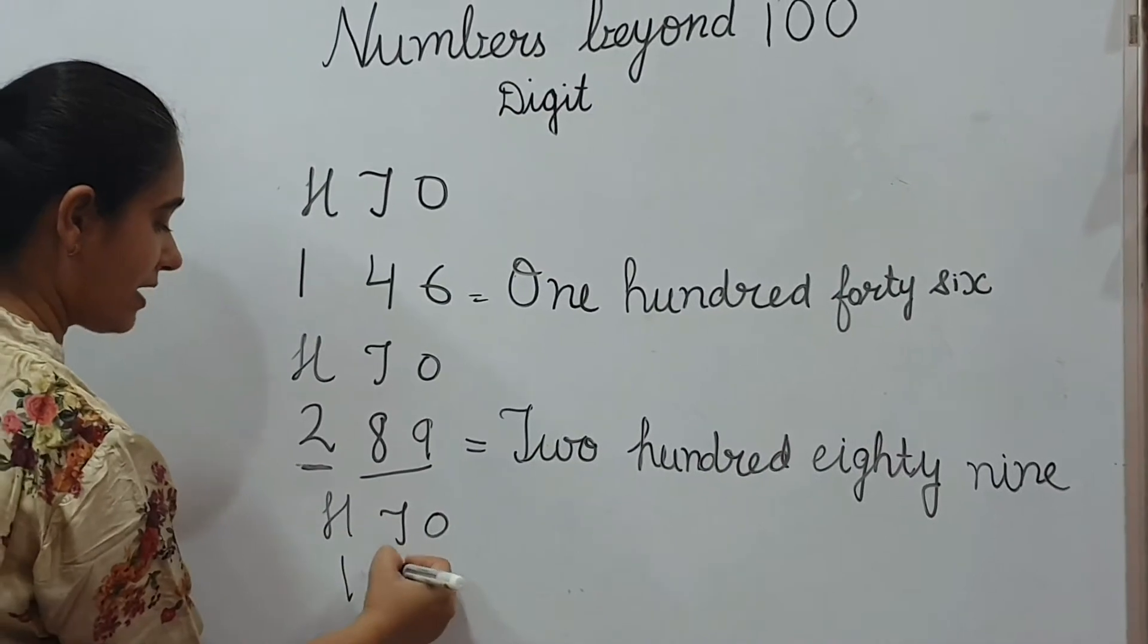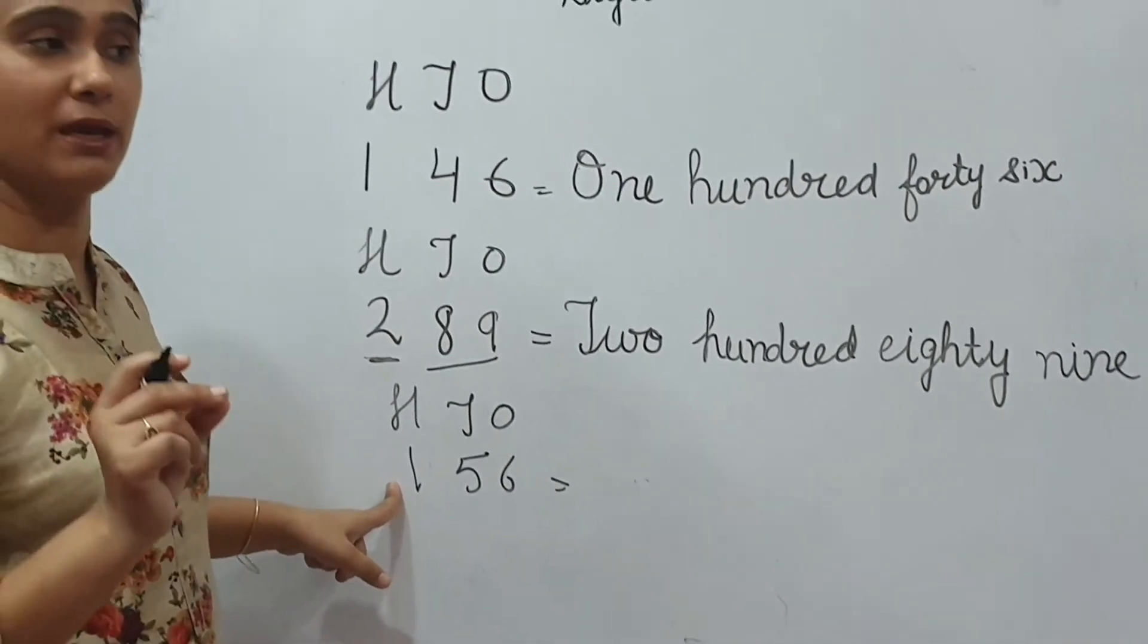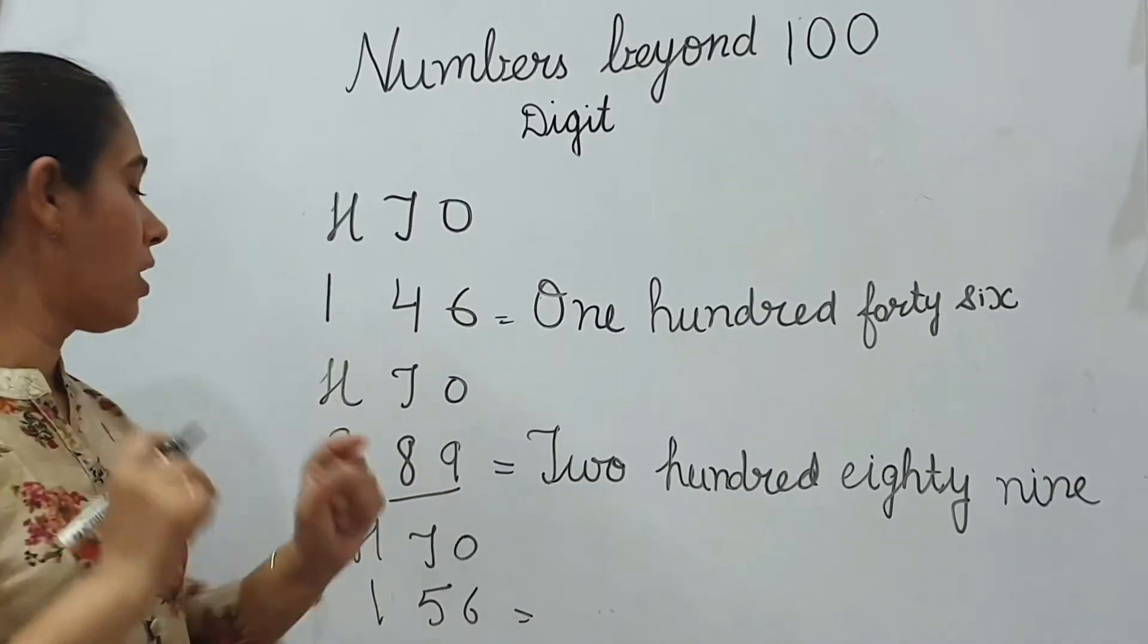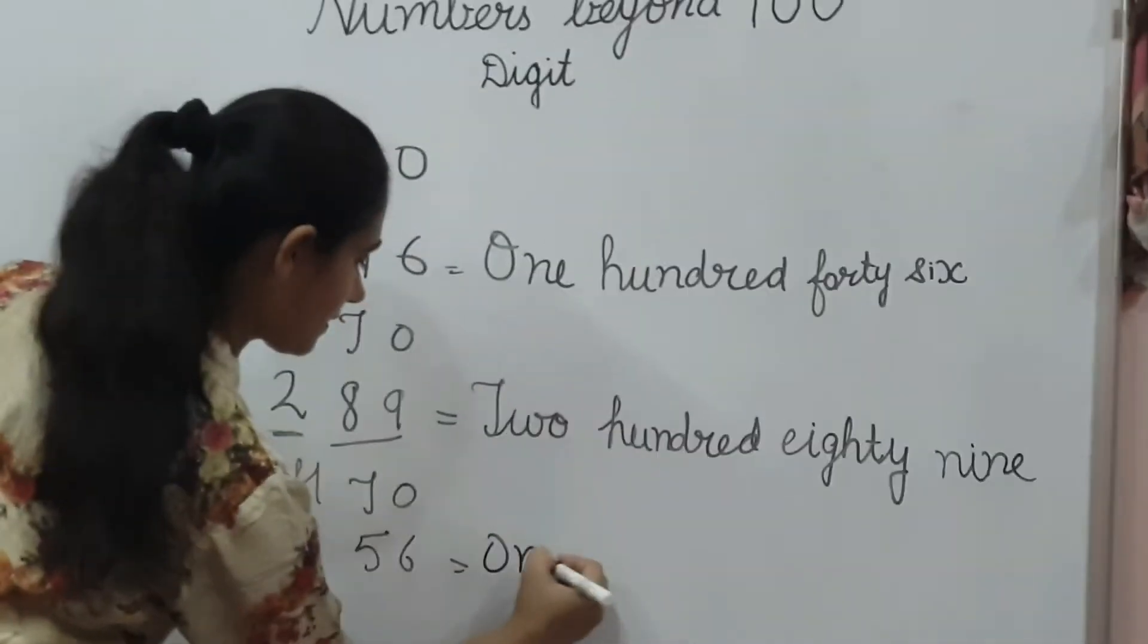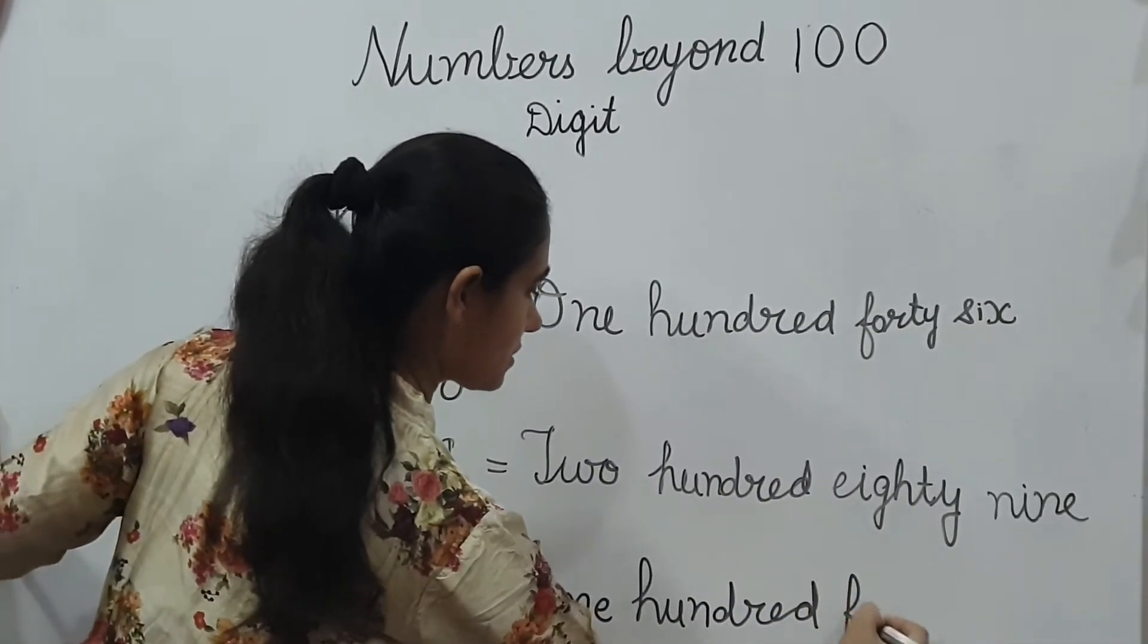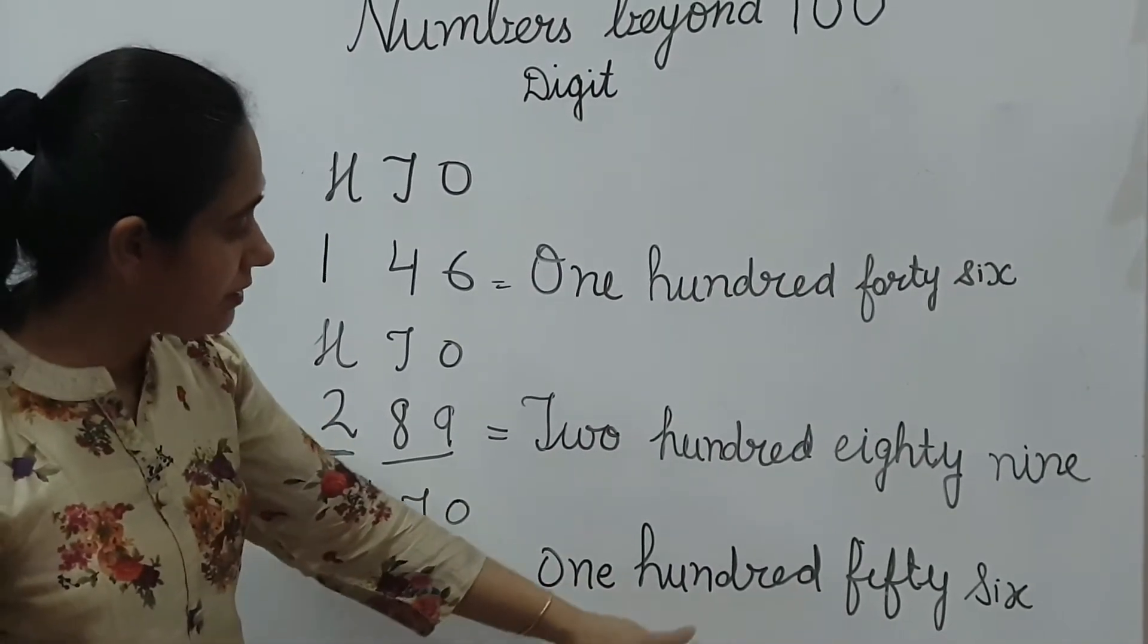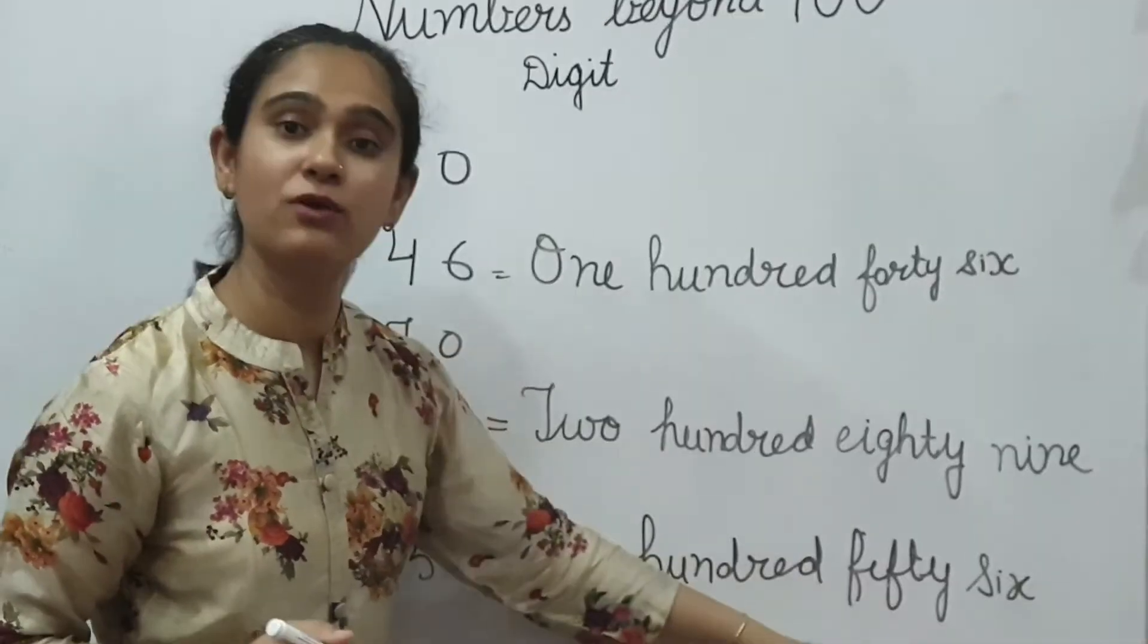One more example. 156. Again, you will not write 1-5-6. How you will write? You have to see the proper number name. So many students done mistake in this. They have written like 1-5-6, but this will be wrong. You will write proper number name of this. 100, 56. F-I-F-T-Y, 56. Now again, O-N-E, 100, H-U-N-D-R-E-D, F-I-F-T-Y, 56.